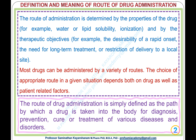Definition and Meaning of Route of Drug Administration. The route of administration is determined by the properties of the drug — for example, water or lipid solubility and ionization — and by the therapeutic objectives — for example, the desirability of rapid onset, the need for long-term treatment, or restriction of delivery to a local site.